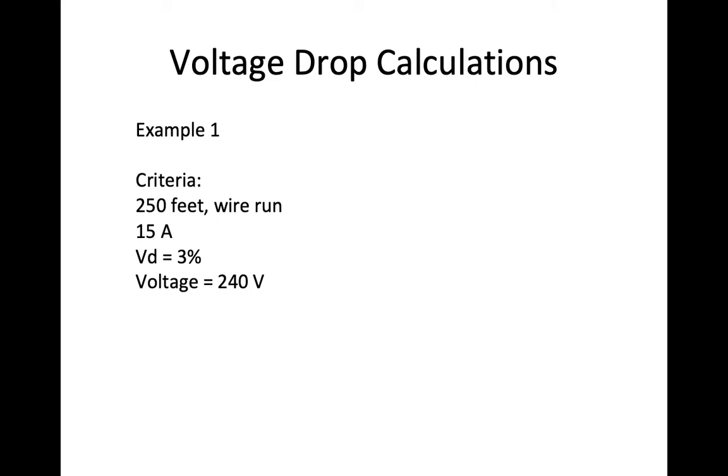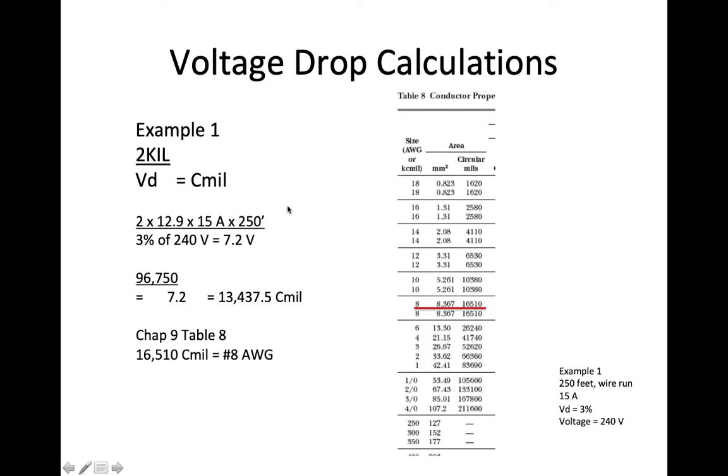Here's an example. I have 250 feet, wire run one direction, 15 amps, I'm going to limit voltage drop to 3% of 240 volts. Here's my formula. 2KIL Vd equals Cmil. I set it up. I always have 2.